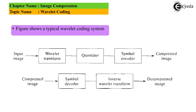The latter half is the block diagram extending from the compressed image to the decompressed image, that is figure B. If the compressed image needs to be reconstructed, it is passed through a symbol decoder. The coding is decoded, and then the inverse Wavelet transform is applied to obtain the decompressed image. We expect the input image and the decompressed image to be more identical to each other compared to other coding techniques.